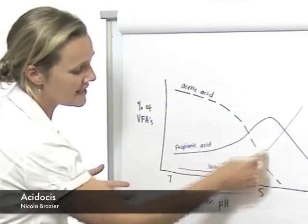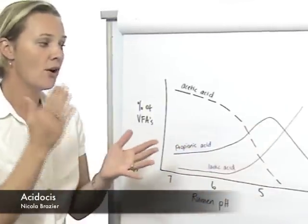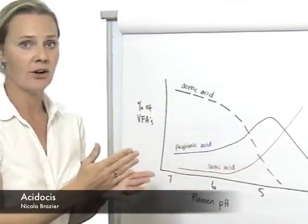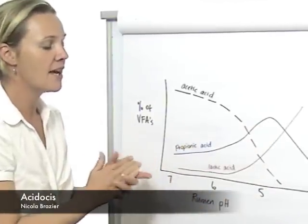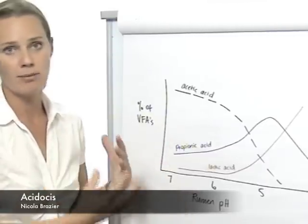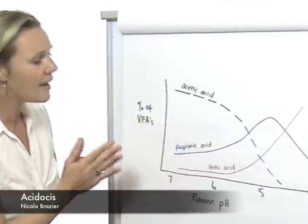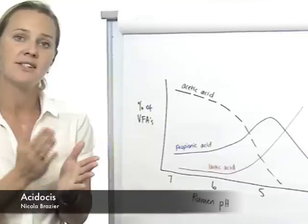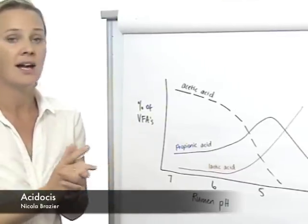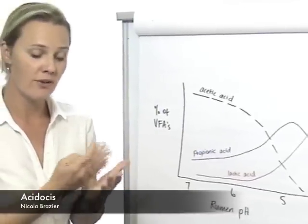Once pH gets down below this level of 5 is when real problems start to occur. You end up with very sick cows, and it is literally a cascade of problems from here on. Acidosis is most usually associated with high levels of grain and low levels of forage.